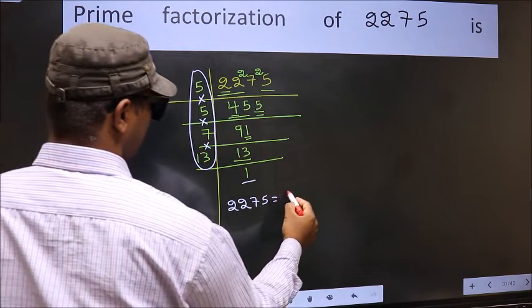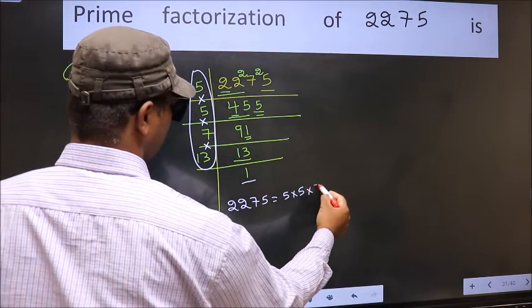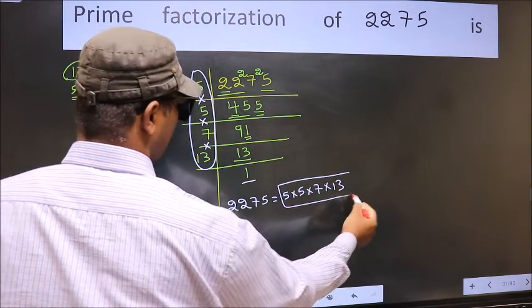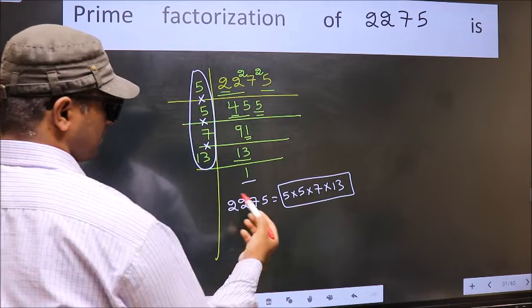That is 5 into 5 into 7 into 13. This is the prime factorization of 2275.